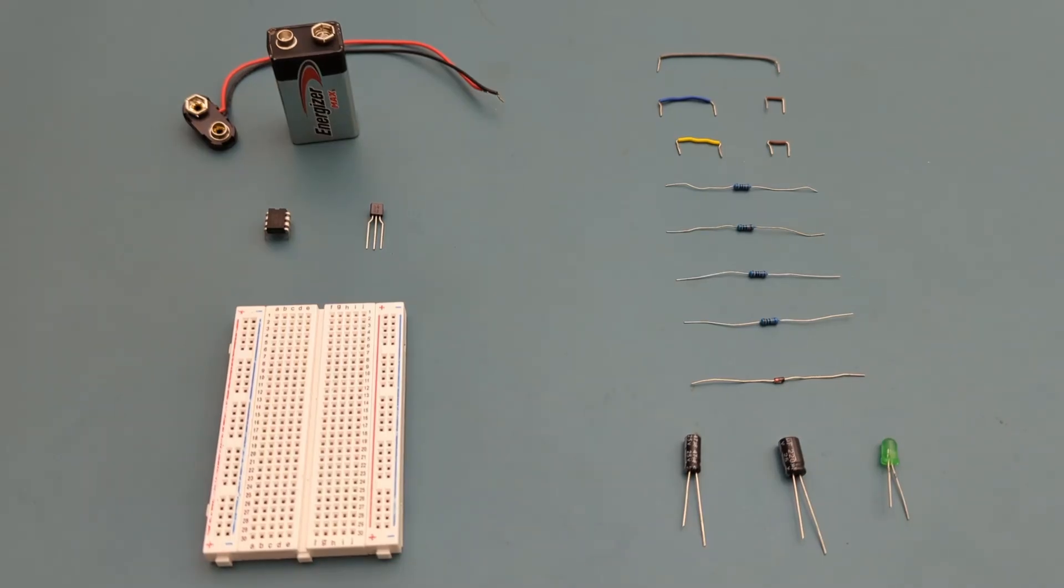Here are all the components you need to set up this circuit. 5 jumper wires, 1 10 kilo ohm resistor, 1 100 kilo ohm resistor, 1 1 kilo ohm resistor, 1 680 ohm resistor, 1 1N4148 fast switching diode, 1 47 microfarad capacitor, 1 220 microfarad capacitor, 1 green LED, a 9 volt battery buckle connector, a 9 volt battery, 1 555 timer IC, 1 BC557 transistor, a breadboard to connect everything together.